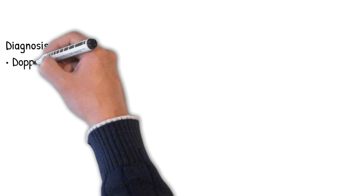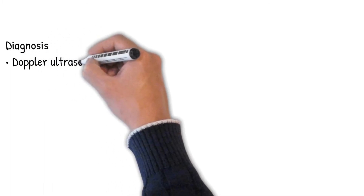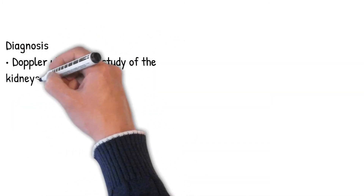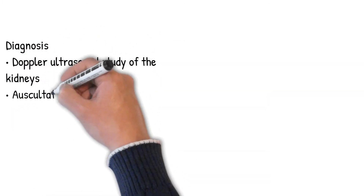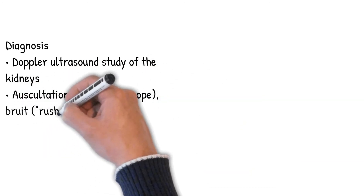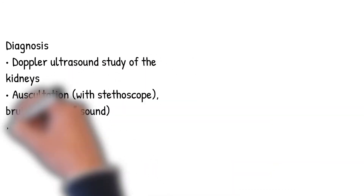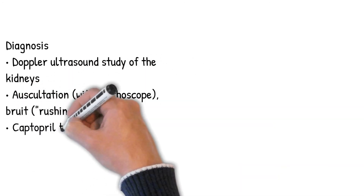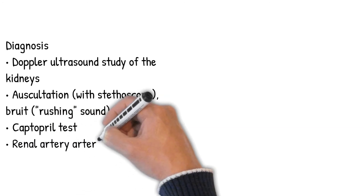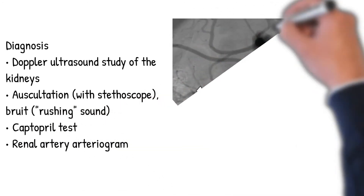Diagnosis methods include Doppler ultrasound study of the kidneys, auscultation with a stethoscope for a bruit or rushing sound, the captopril test, and renal artery arteriogram.